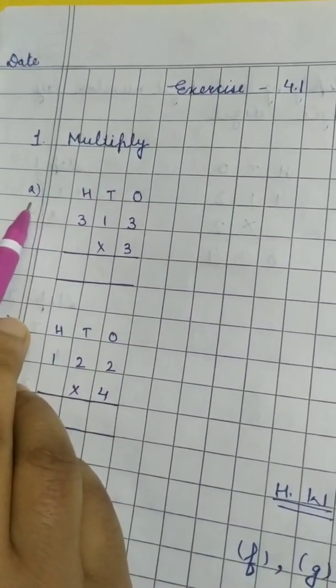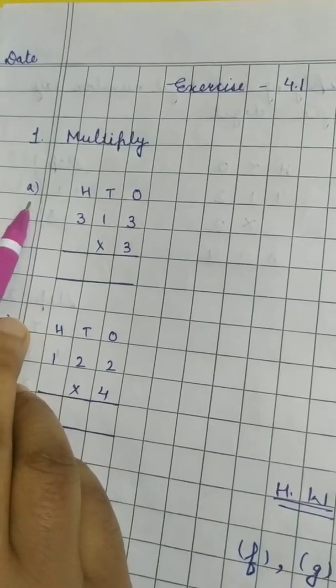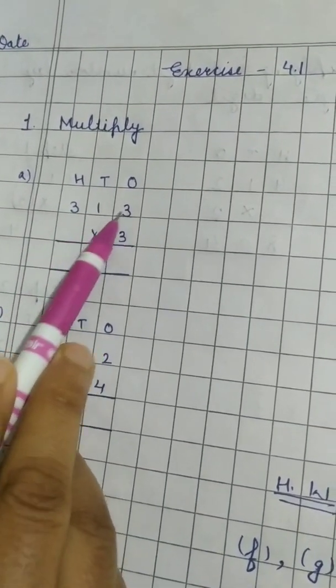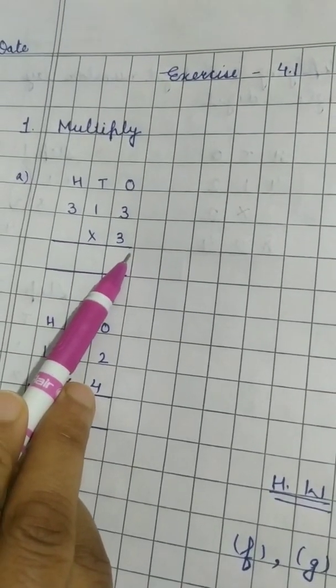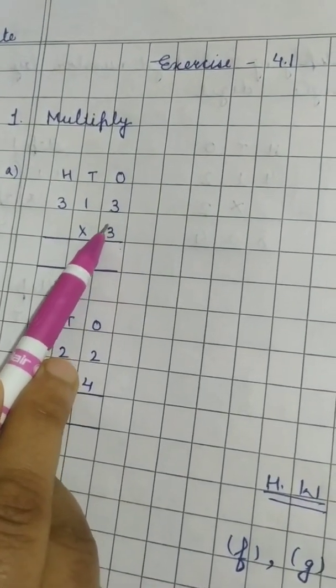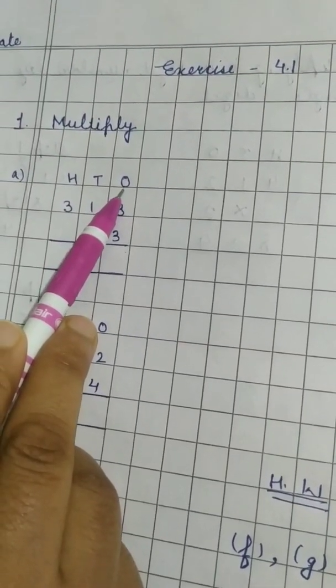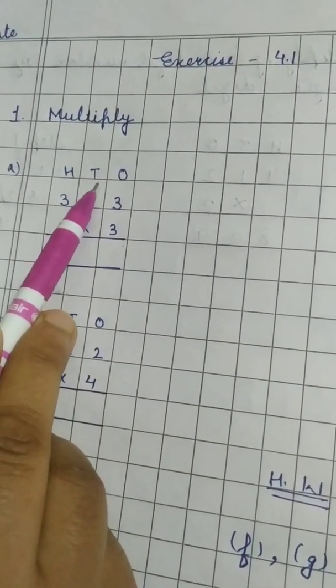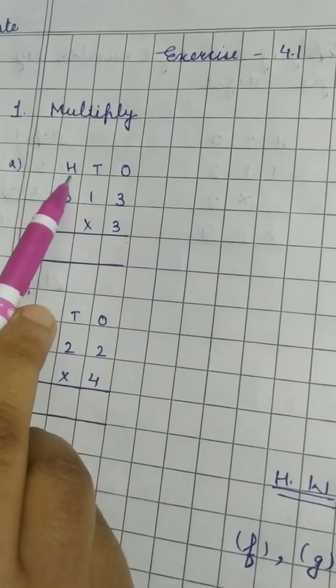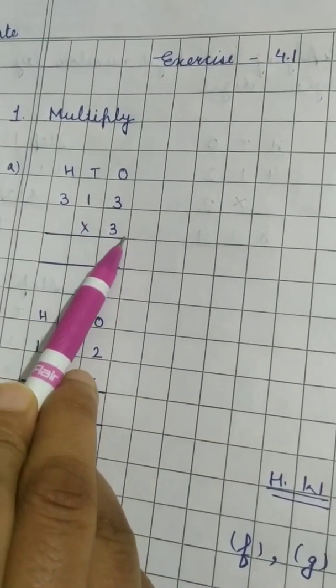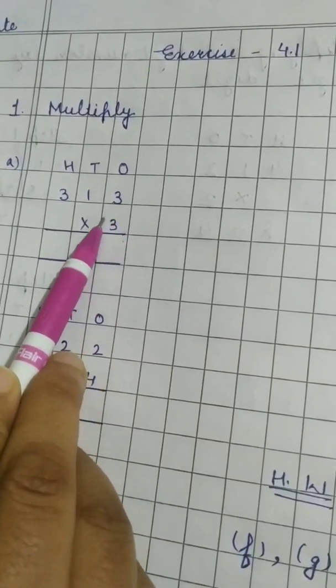Here I am going to solve two questions and two will be the homework. The first question is 313 multiplied by 3. First of all as I explained earlier we have to take the digit at 1's place then at 10's place and then at 100's place. See, we have to take the table of this 3. Now let us start.